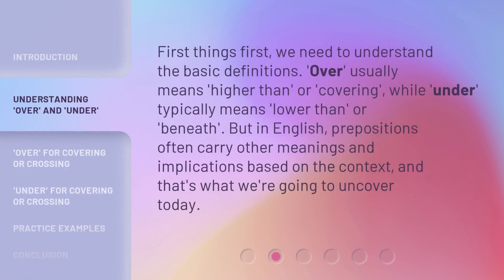First things first, we need to understand the basic definitions. Over usually means higher than or covering, while under typically means lower than or beneath. But in English, prepositions often carry other meanings and implications based on the context. And that's what we're going to uncover today.